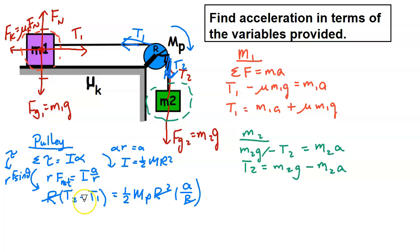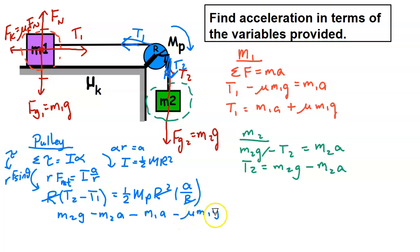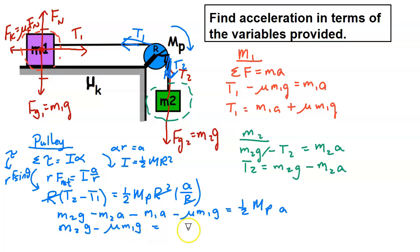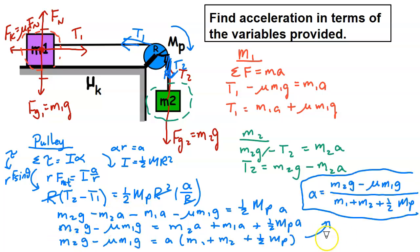Substituting t2 = m2g − m2a and t1 = m1a + μ·m1g into the simplified torque equation: (m2g − m2a) − (m1a + μ·m1g) = (1/2)·mp·a. Collecting all terms without acceleration on the left and all acceleration terms on the right: m2g − μ·m1g = m2·a + m1·a + (1/2)·mp·a.